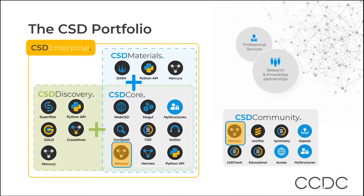To help you learn more from the CSD, we have a range of associated software to search, visualize, analyze and learn from the data. In this module, we'll be using our visualization and analysis software called Mercury. There is a free version of Mercury available in CSD Community that enables you to do the basics of structure visualization. For more advanced visualization and analysis, as well as access to the entire CSD, you'll need our licensed version available in CSD Core.